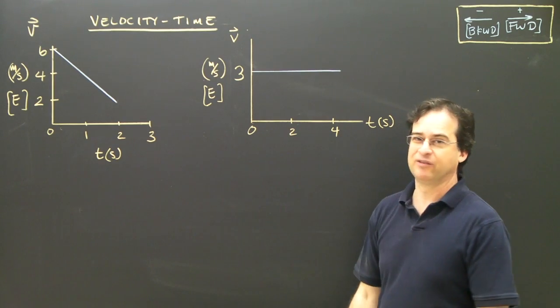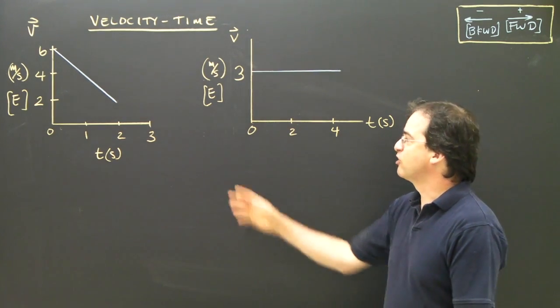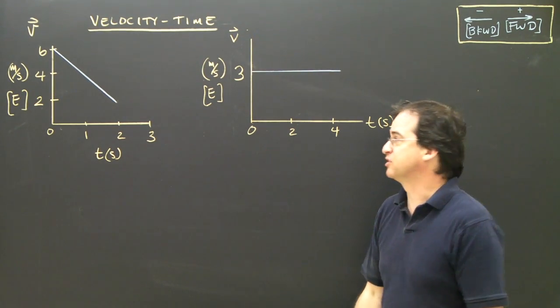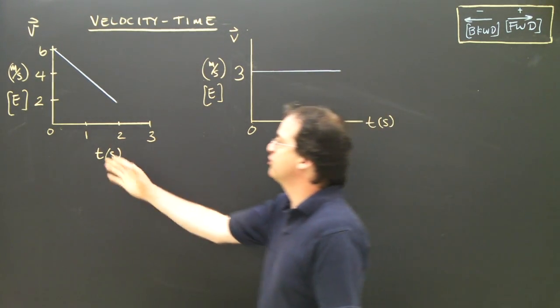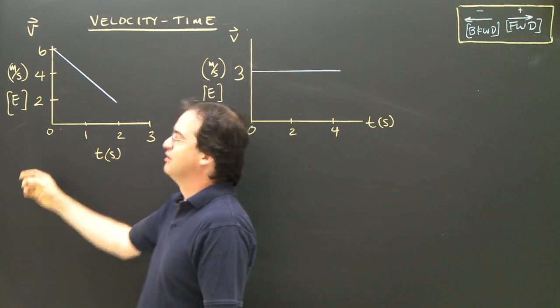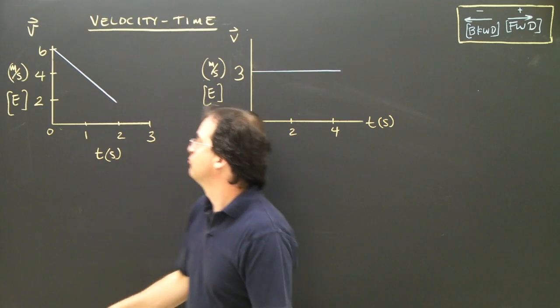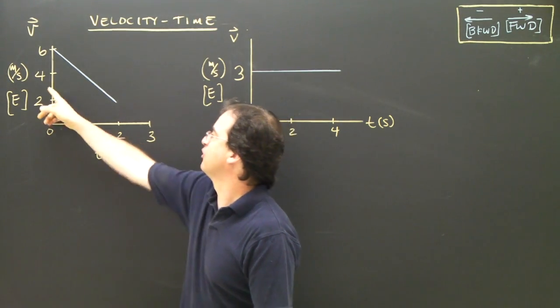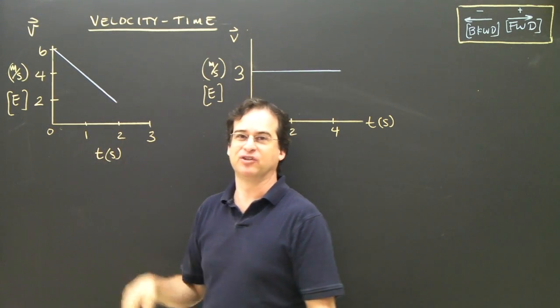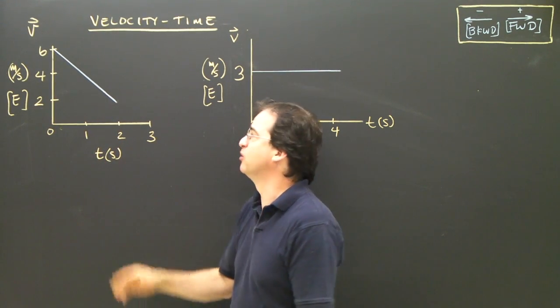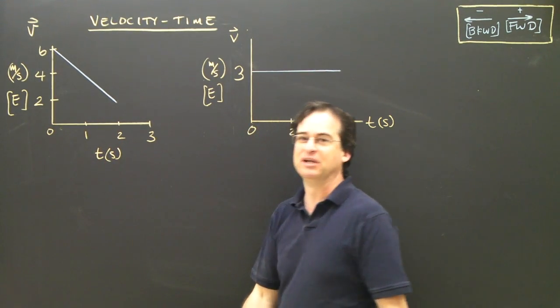Here are our two VT graphs, and we're going to try to figure out what these objects are doing. So let's look at the first one. First question: what kind of graph is it? A velocity-time graph — it tells you how fast you're going at any given time.